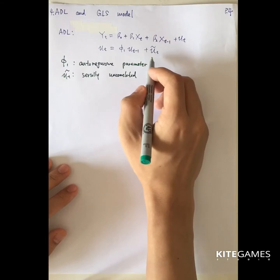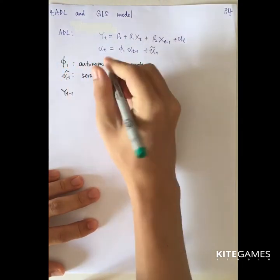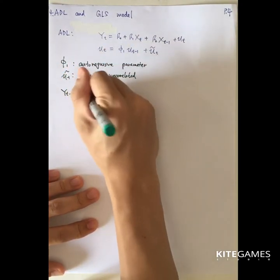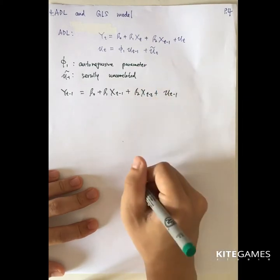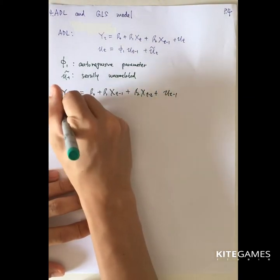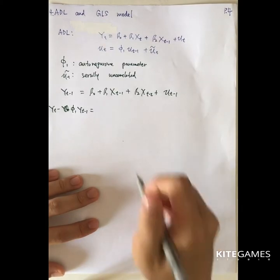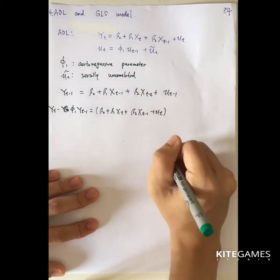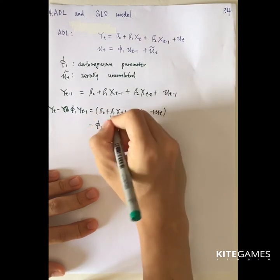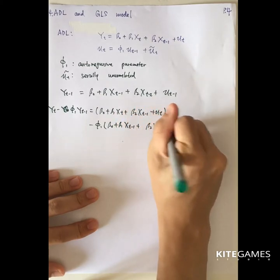You know that u-tilde_t is not a serially correlated term, so you need to change every u to be u-tilde. First, lag the equation by 1 to get beta_0 plus beta_1 xt minus 1 plus beta_2 xt minus 2 plus ut minus 1. Then compute yt minus phi_1 times yt minus 1, giving beta_0 plus beta_1 xt plus beta_2 xt minus 1 plus ut, minus phi_1 times beta_0 plus beta_1 xt minus 1 plus beta_2 xt minus 2 plus ut minus 1.